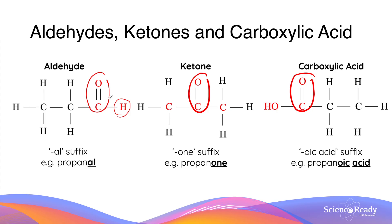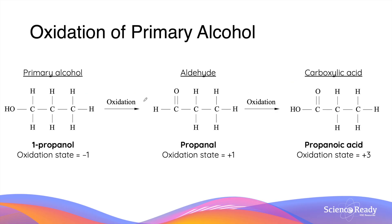Oxidation of primary alcohol produces an aldehyde where the oxidation state goes from minus one to plus one. However, aldehydes can be further oxidized to produce a carboxylic acid, which has a much higher oxidation state of plus three. Since the aldehyde can be further oxidized, the oxidation of a primary alcohol usually always forms the final product, which is the carboxylic acid. In this example, oxidation of 1-propanol, even though it produces propanal, the final product we usually see is propanoic acid.